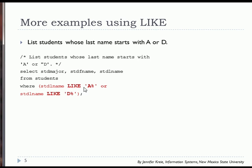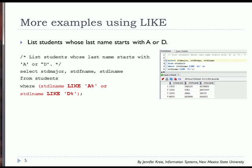So student last name LIKE 'A%' or student last name LIKE 'D%'. Now we see the results include the three from earlier, but we've added Davis.